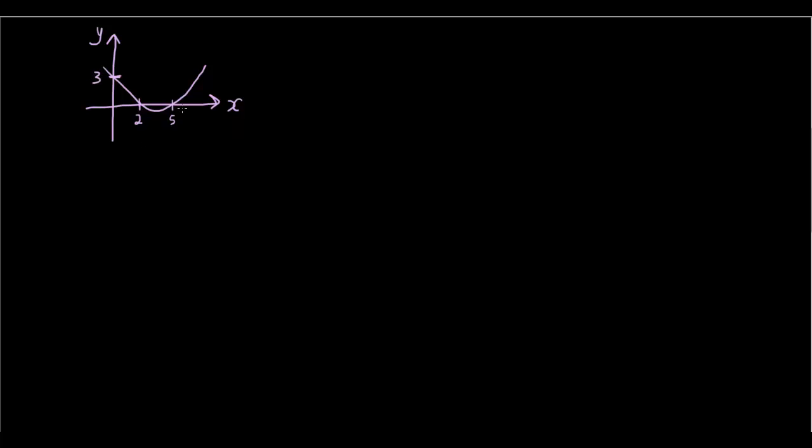So how would you find the equation of this graph? Well, if you remember the factored form of quadratic equations, where if we have y equals (x-a)(x-b), then the x-intercepts will occur at x equals a or b.